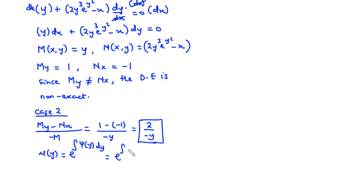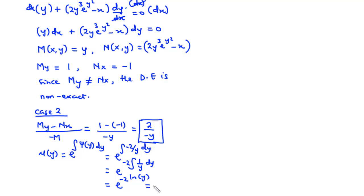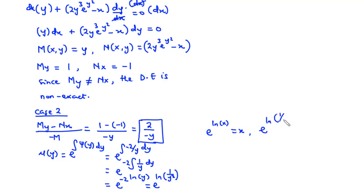That equals e to the power of the integral of negative 2 over y dy. Pulling out the constant negative 2, we integrate 1 over y to get ln(y), giving e to the power of negative 2 ln(y), which equals e to the power ln(y to the power negative 2). Using the property that e to the power ln(x) equals x, we get e to the power ln(1/y²) equals 1/y². Therefore the integrating factor μ(y) equals 1 over y².